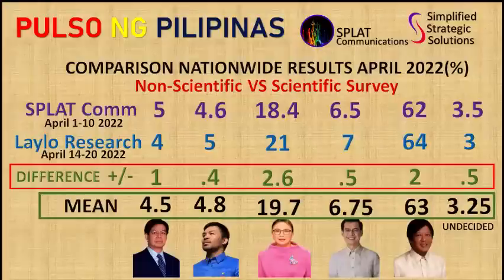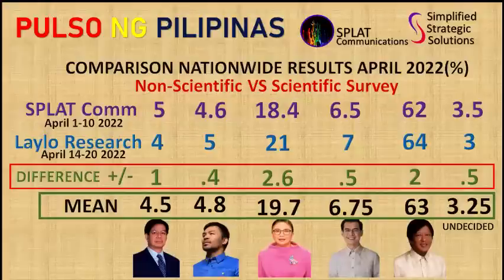We can deduce, based on this data science-driven computation, that the COLLIA survey summaries are as accurate as the scientific surveys. Now, kindly look at the bottom row enclosed in the green rectangle. We computed for the mean or average preference shares based on this data science-based comparison. These are the most accurate presidential preference figures and we shall quantify this later on.